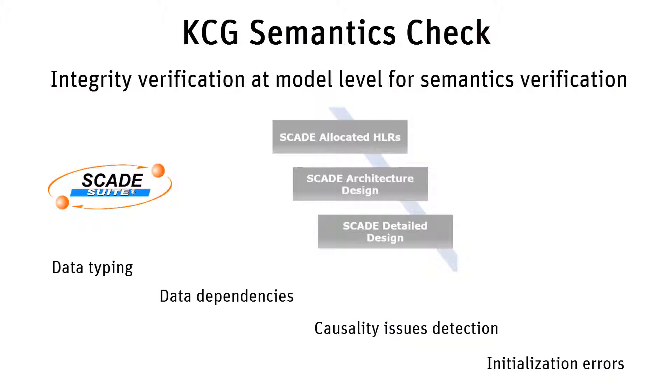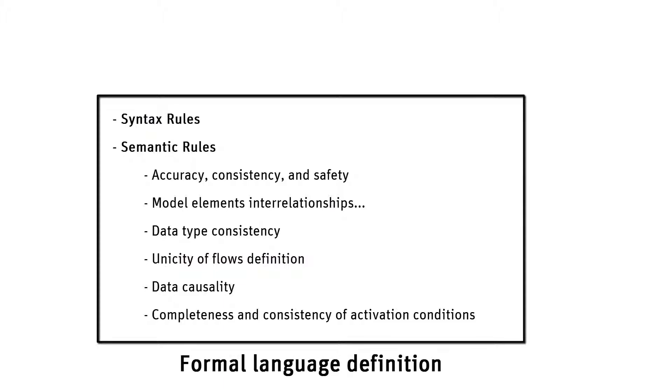It generates an HTML report with hyperlinks to help the user locate errors. In the DO-178C context, SCADE Suite KCG has been pre-qualified for level A, Criteria 1, TQL-1. The checker contains design standard SCADE rules for the qualified check — syntax rules and semantic rules — that ensure accuracy, consistency, and safety. Many of them address model elements in relationship: they verify data type consistency, check that every flow has one and only one definition in any cycle where it is used, verify causality so that data must be produced before being consumed, and check the completeness and accuracy of activation conditions. Pre-defined rules are part of the formal language definition; KCG rejects any non-conforming model and the code cannot be generated in that case.